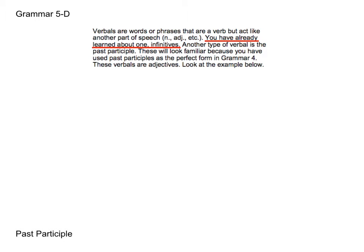Today we're going to go over another type of verbal called a past participle. Past participles will also look familiar to you because they were used as the perfect form in Grammar 4 — that's what we used as the main verbs when we were using perfect form. But it's important to note that these verbals are going to be acting like adjectives. So they can be in the perfect form as a main verb, or they can also be adjectives modifying nouns.